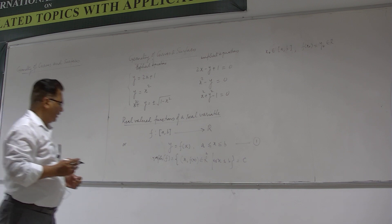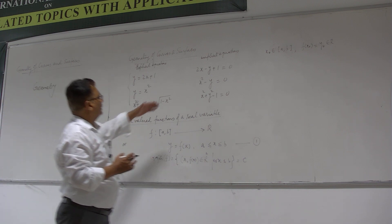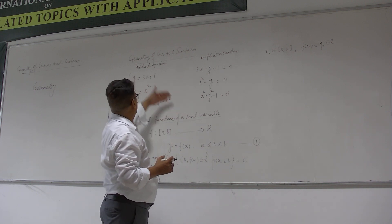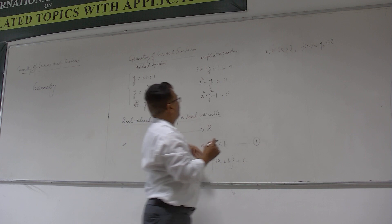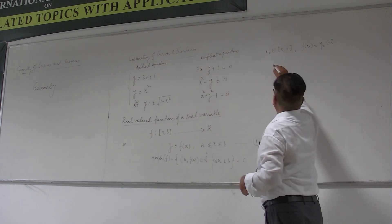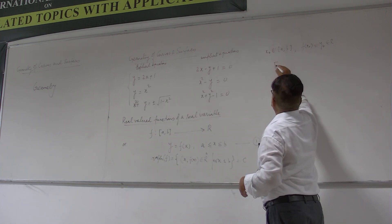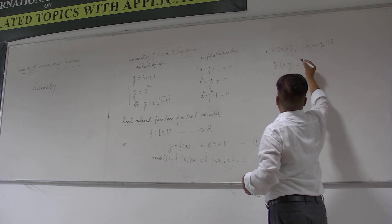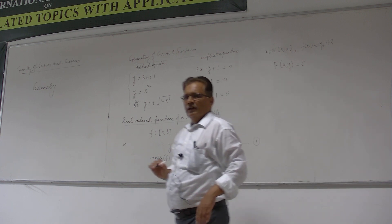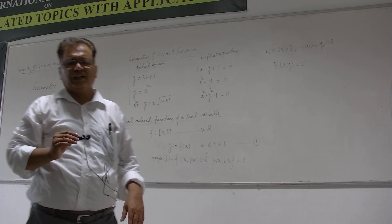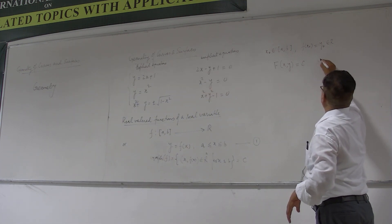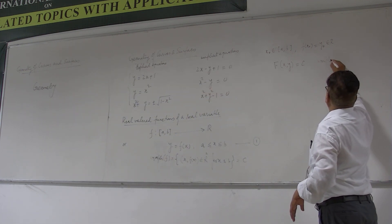Now, you can also notice the second set of equations — we have written the same equation in implicit form. So I can also say that a function of two variables, where f(x, y) = constant, also represents a curve in a plane. This is an implicit equation. In general, an implicit equation in two variables would look like this.